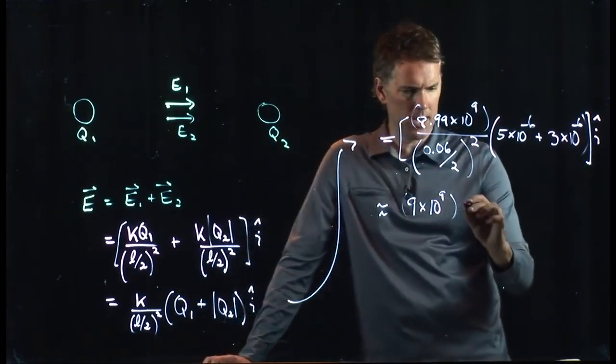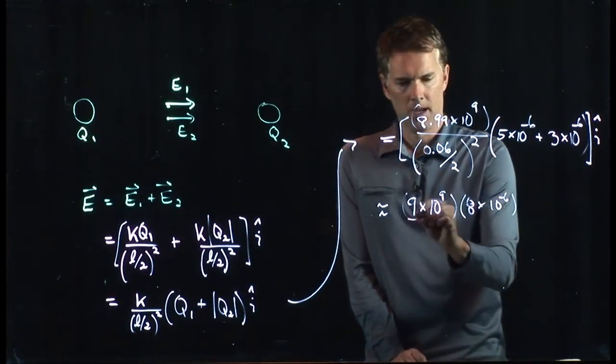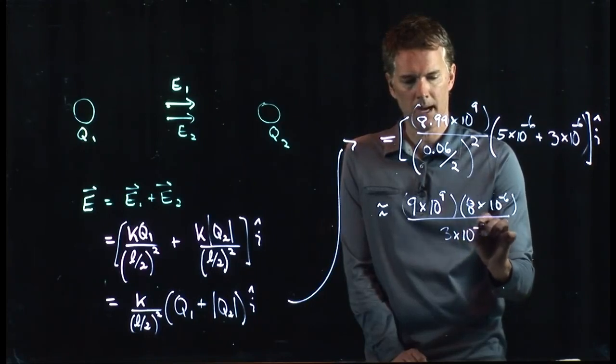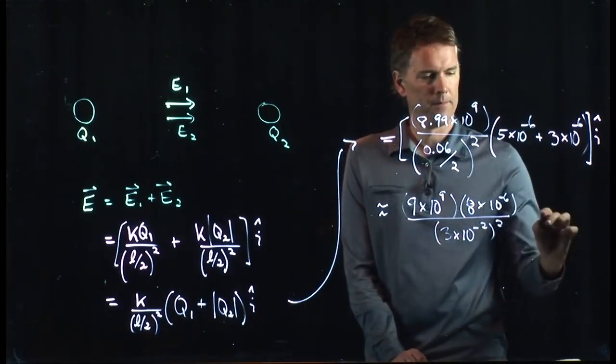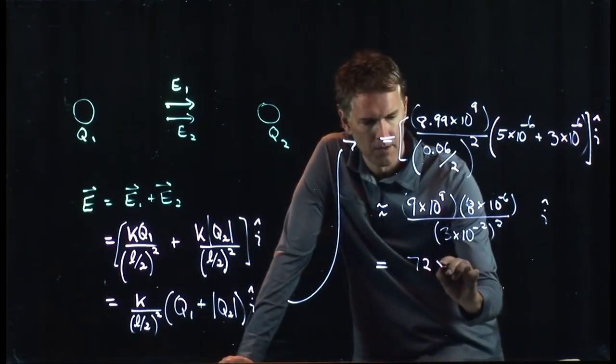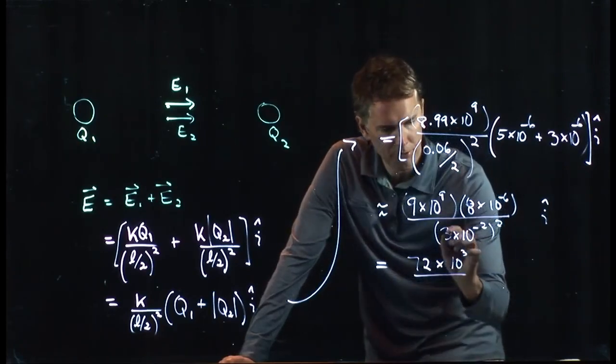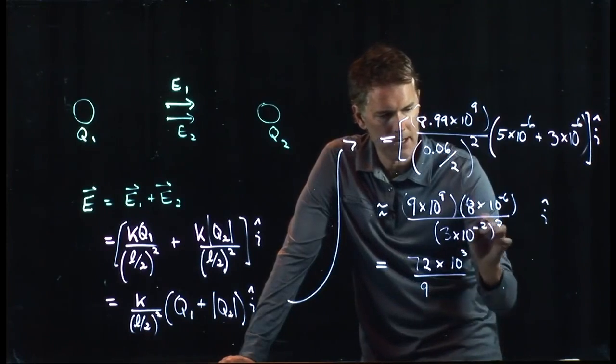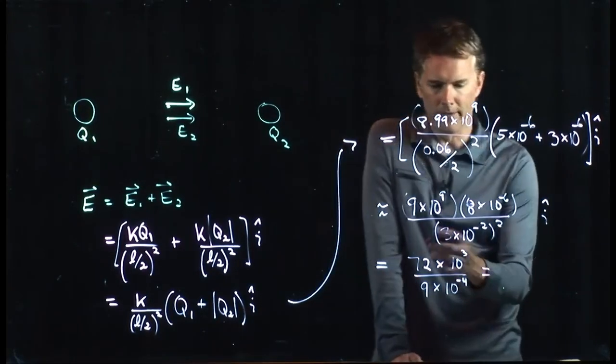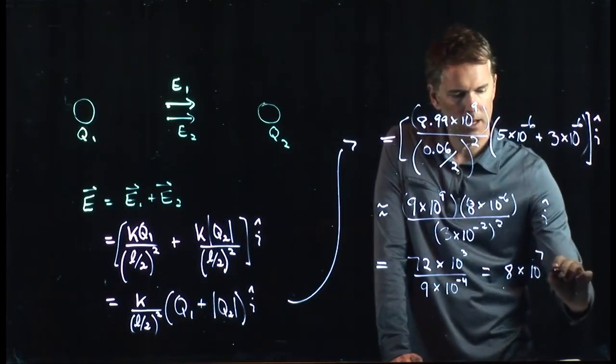So that's a 9 times 10 to the 9. We're going to multiply by 8 times 10 to the minus 6. And then we're going to divide by 0.03 squared, which is 3 times 10 to the minus 2 quantity squared. All right. 9 times 8 is 72. We have a 10 to the 9 and a 10 to the minus 6. So that's a 10 to the 3. Downstairs, we have 3 squared, which is 9. 10 to the minus 2 squared is 10 to the minus 4. So 72 over 9, we just went backwards. It's 8 times 10 to the 7 in the i hat direction.